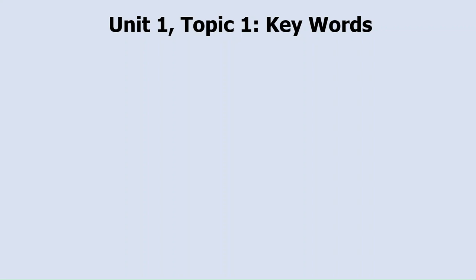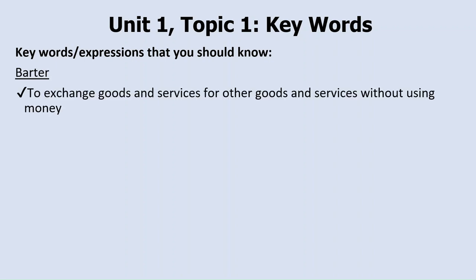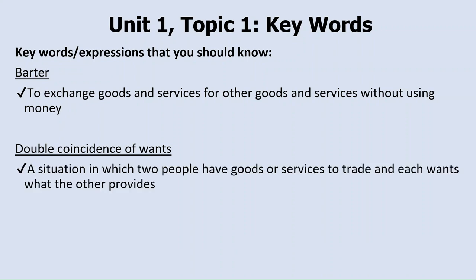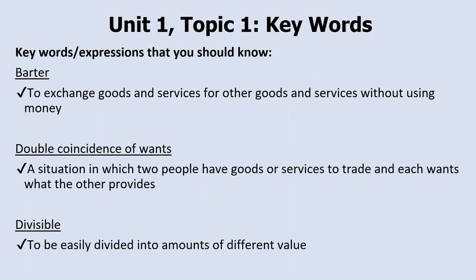Some key words we need to know about when it comes to money and its functions. Firstly, barter: to exchange goods and services for other goods and services without using money. Remember, it depends and is reliant upon a double coincidence of wants. The double coincidence of wants is a situation in which two people have goods or services to trade and each of those people wants what the other provides. Divisible is when money is easily divided into amounts of different value — we need to make sure we can divide it up because there are smaller items to pay for and larger items.